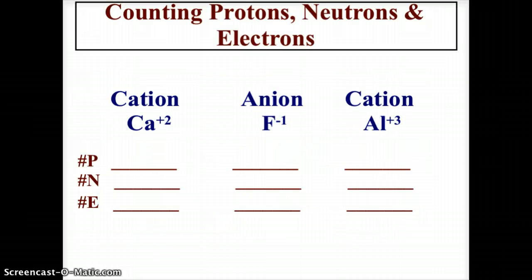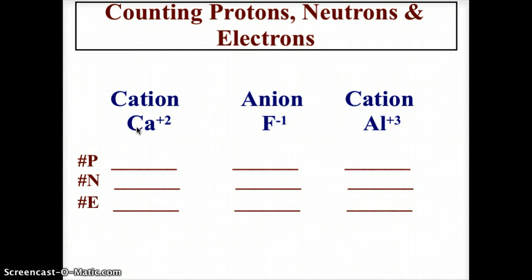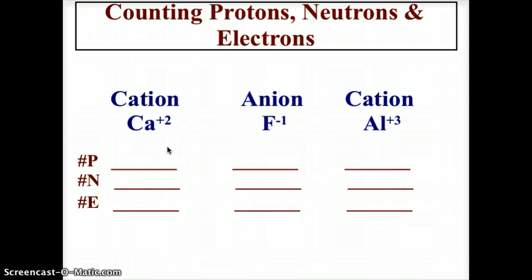Here we have three examples: a cation of calcium plus 2, an anion of fluorine negative 1, and a cation of aluminum positive 3. For calcium, the atomic number is 20, so it has 20 protons. Its mass is 40, so it needs 20 neutrons. Because it has a positive 2 charge, it would have 2 more protons than electrons, so it would have 18 electrons.